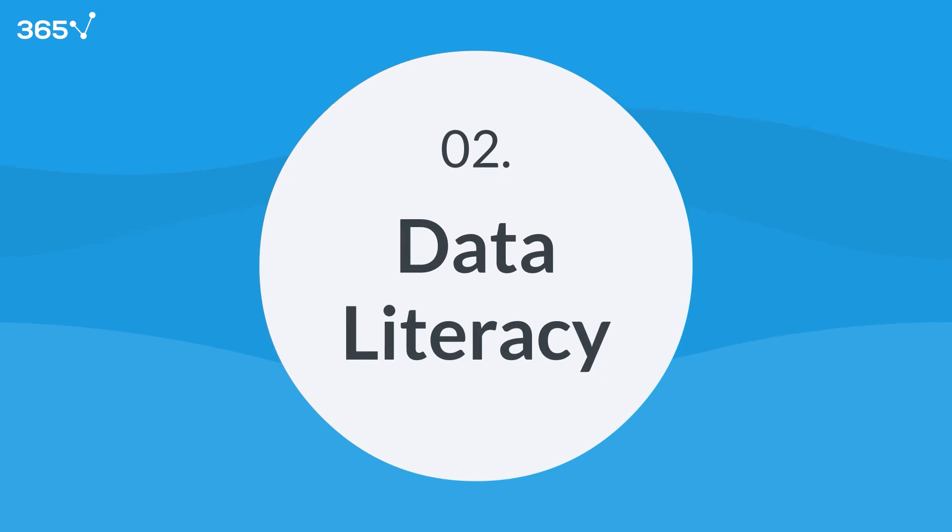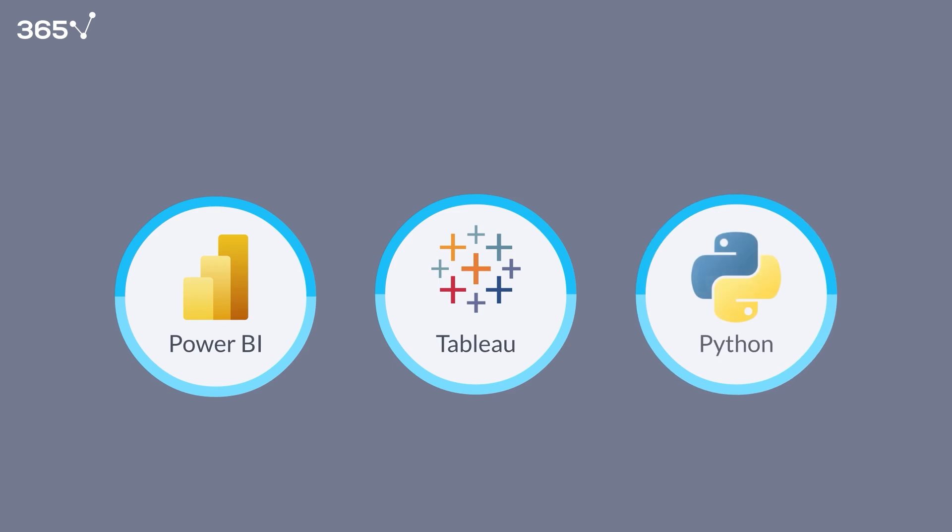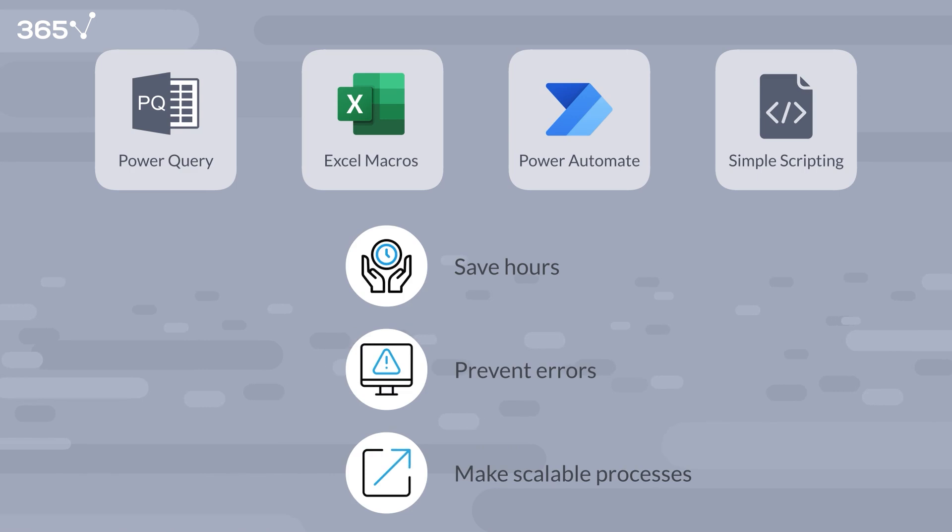Skill number two: data literacy. Finance is no longer just about the numbers. It's about the tools that empower you to reach them. That's where digital literacy comes in. You can use technology to move faster, automate smarter, and reduce manual work across the board. Think Power Query, Excel macros, Power Automate, and even simple scripting. These tools save hours, prevent errors, and make your processes scalable.